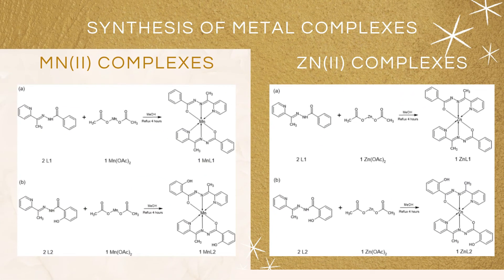The synthesis of metal complexes was done in a similar manner to the production of their ligands, using metal salts and ligands of interest as starting materials. For example, the manganese Ligand 1 complex was synthesized by mixing 0.5 millimoles of manganese salt and 1 millimole of synthesized Ligand 1 in methanol, then refluxing for four hours. After reflux, it was left to recrystallize overnight before filtration, washing, drying, and weighing. These steps are the same for the zinc complex synthesis.